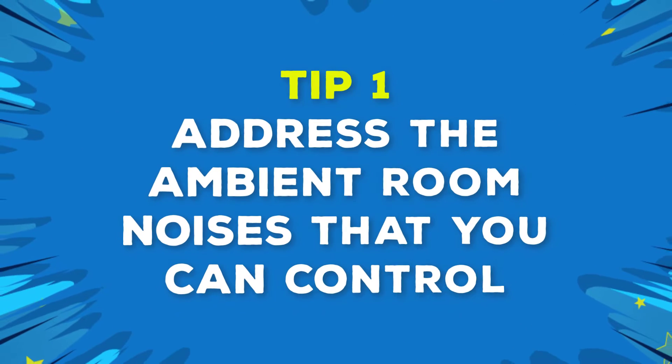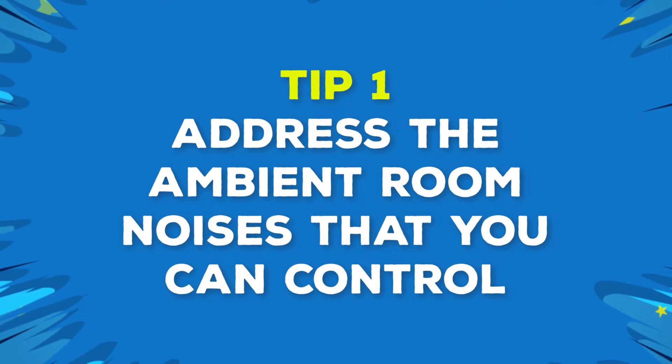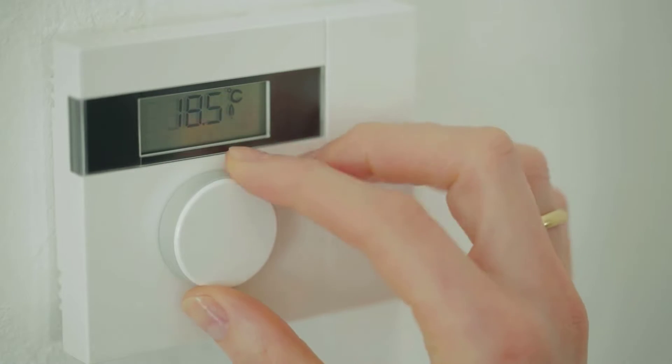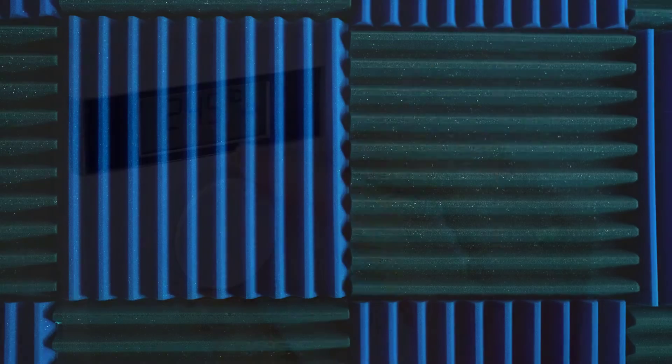Tip number one: address the ambient room noise or tone elements that you have control over before you press record. All recordings have an underlying ambient room noise or tone. Here are some things you can do: close the doors, temporarily turn off your heating and cooling systems, add acoustic treatments to your rooms.